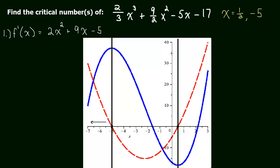And then, to the right of 1 half, the derivative is positive, so the slope should all be positive. And that's true. That's what we're getting.